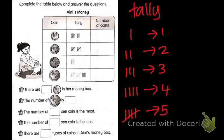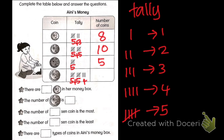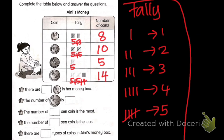Five cents — how many? Here's five and three, so five plus three is eight. Ten cents — five and five, so five plus five is ten. Twenty cents — five plus five is ten, plus another four is fourteen. It's easy — just refer here.